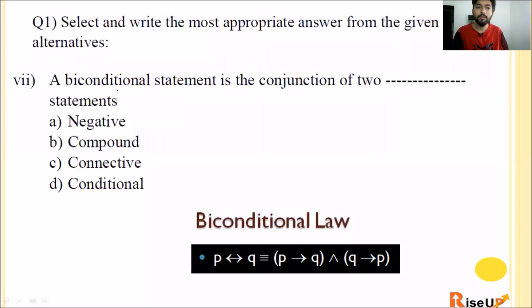Sixth one: If P represents he is intelligent, Q represents he is strong, then symbolic form of the statement 'it is wrong that he is intelligent or strong' - it is wrong means negation. He is intelligent is P or strong is Q. So the negation of P or Q. So C is the correct option.